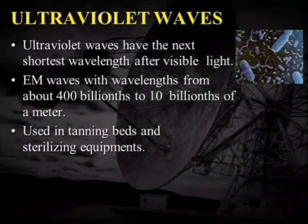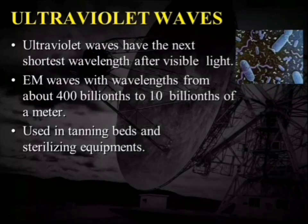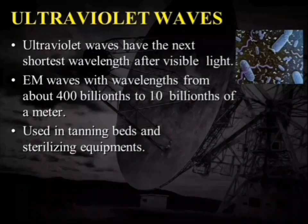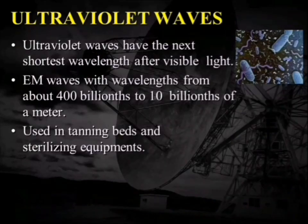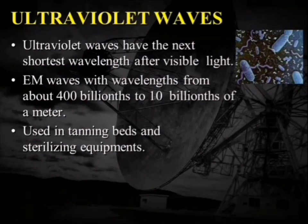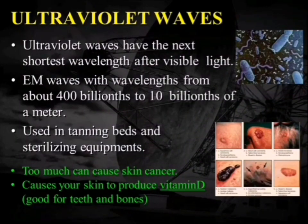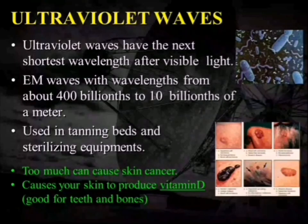Ultraviolet waves have higher frequencies than the visible region and the next shortest wavelengths after visible light, ranging from 400 billionths to 10 billionths of a meter. They are used in tanning beds, sterilizing equipment, and nowadays for sterilizing rooms to prevent the spread of COVID-19. However, too much exposure can cause skin cancer. Ultraviolet light also triggers the skin to produce vitamin D, which is good for teeth and bones.